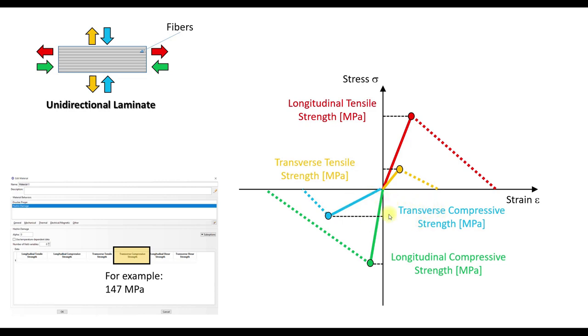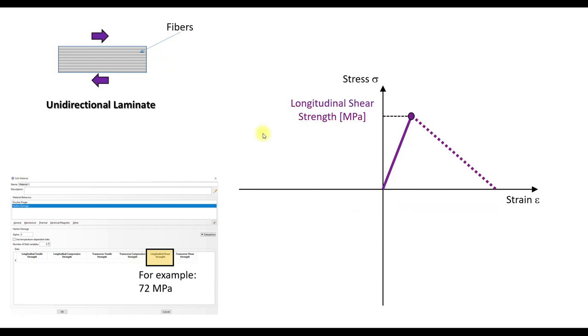Next, we have transverse compressive strength, as shown here in this diagram. For example, we can have like 147 megapascals. It is in general higher than the transverse tensile strength. As can be seen here, in this example we have like 72 megapascals.